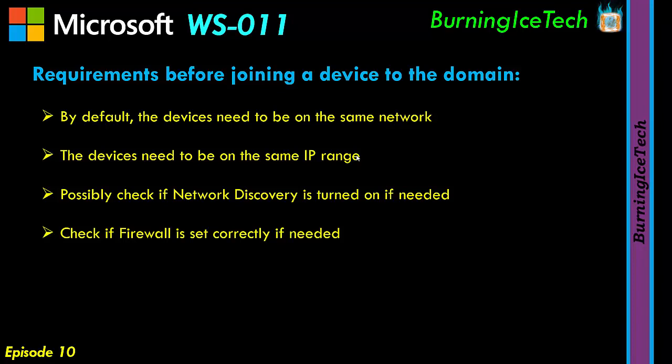If network discovery doesn't solve it, check your firewall. It's not supposed to happen, but there have been occasions where the domain isn't picked up unless the Windows firewall is turned off. If you're having an issue, temporarily turn off the Windows firewall and see if that helps — if not, turn it back on. You can also do a ping to test remote connectivity: from the device you want to join, ping the IP address of the Active Directory server, and also test it the other way around from the server to the client.